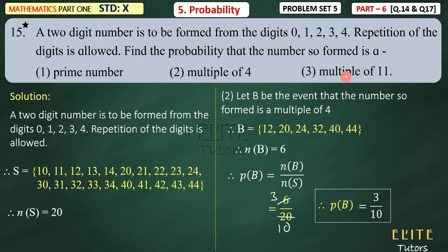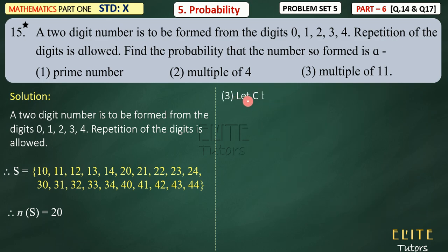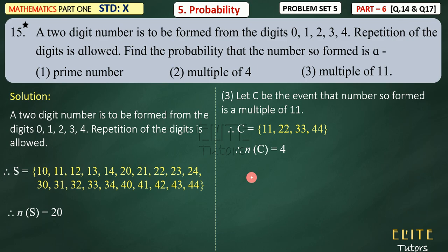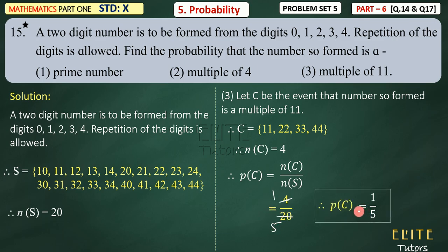Now let's go to the third one, which is multiples of 11. Let C be the event that the number so formed is a multiple of 11. Multiples of 11: 11, 22, 33, 44. So N(C) = 4. P(C) = N(C) / N(S) = 4/20 = 1/5. So the probability is 1/5. Question 15 is finished.